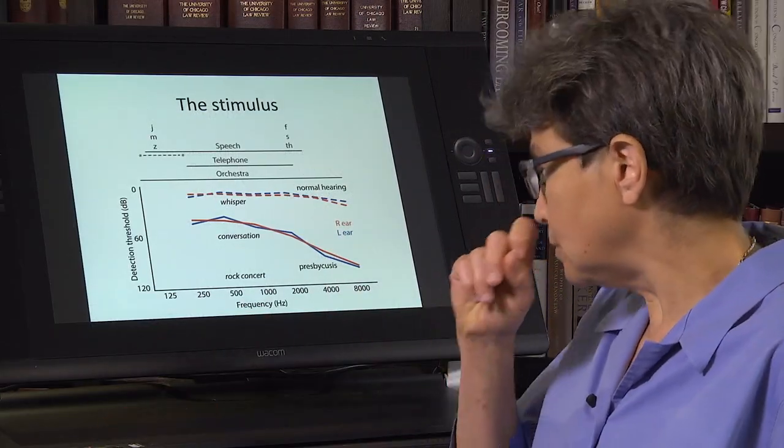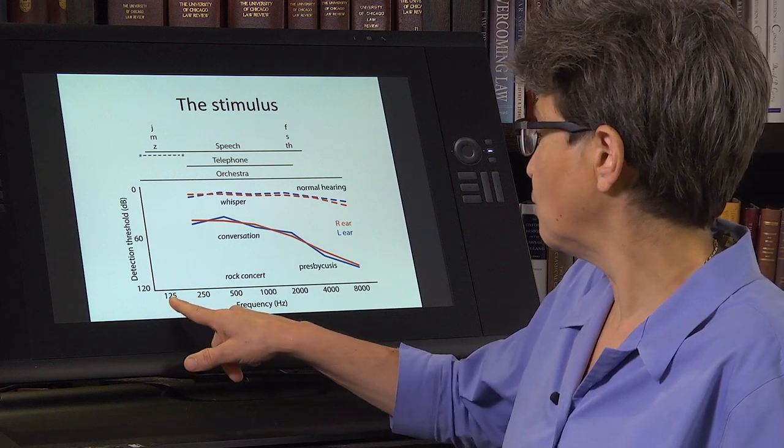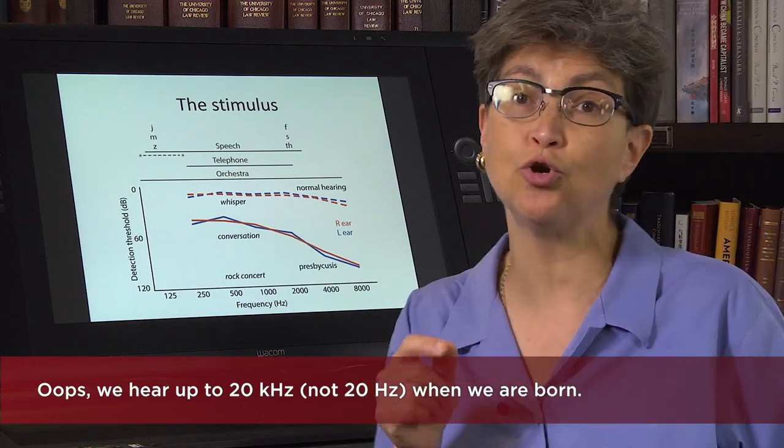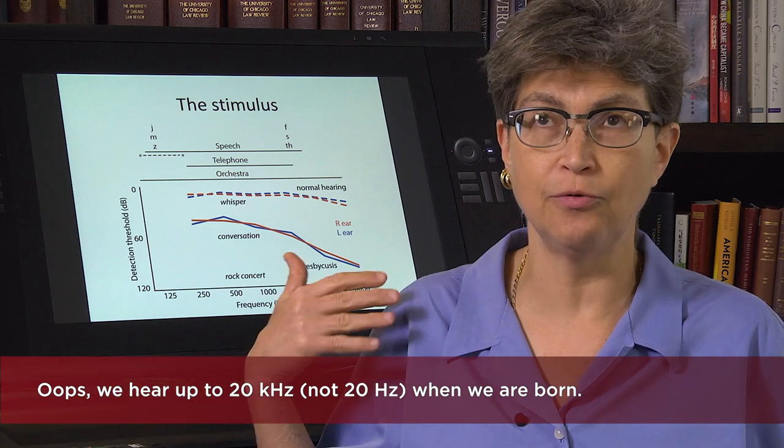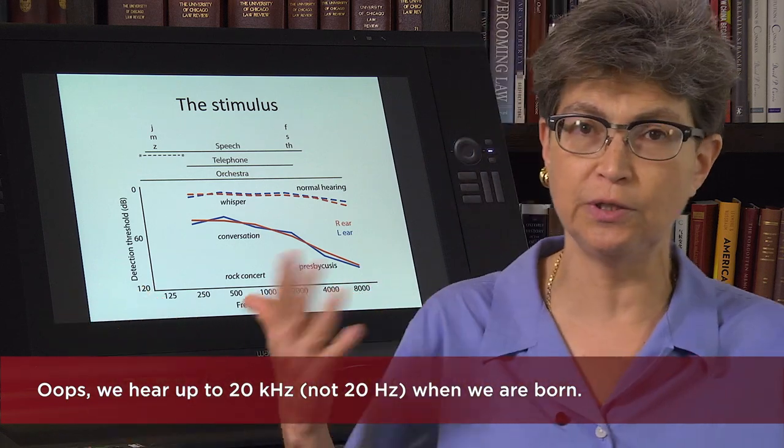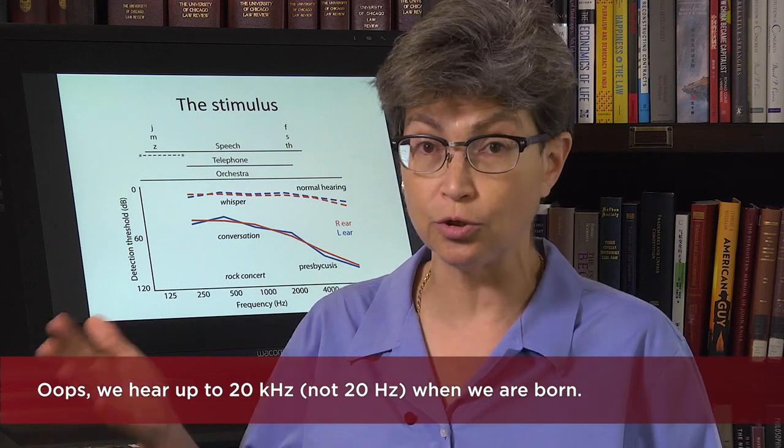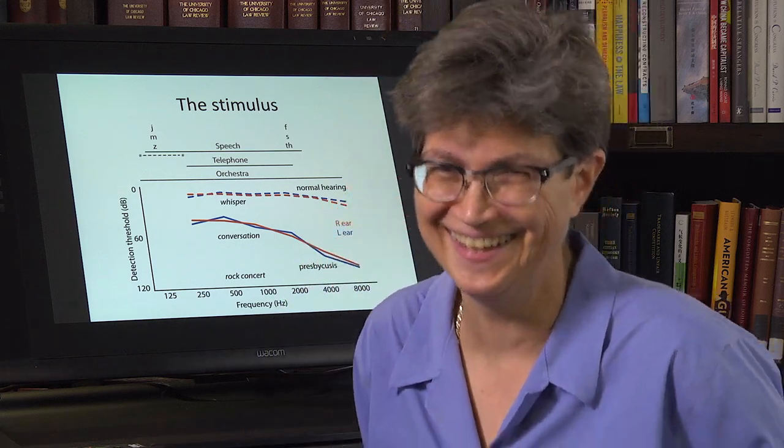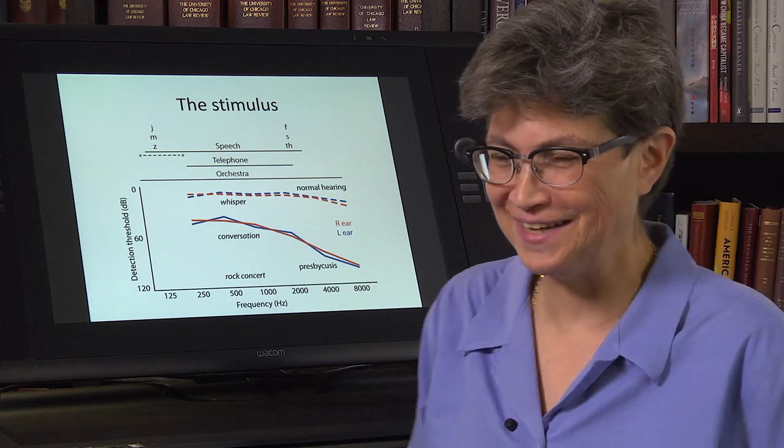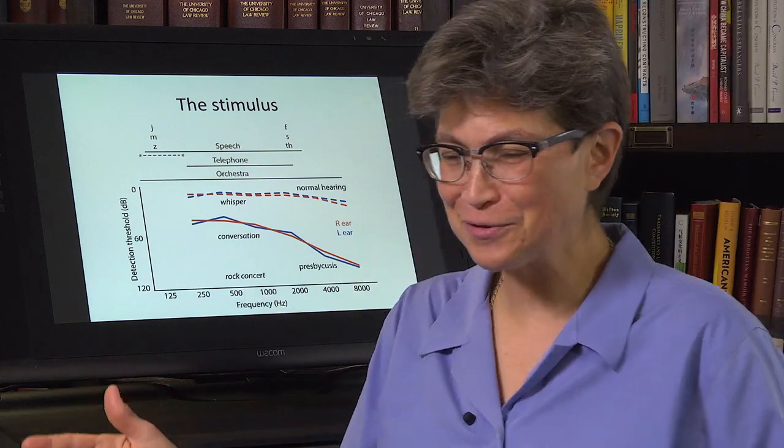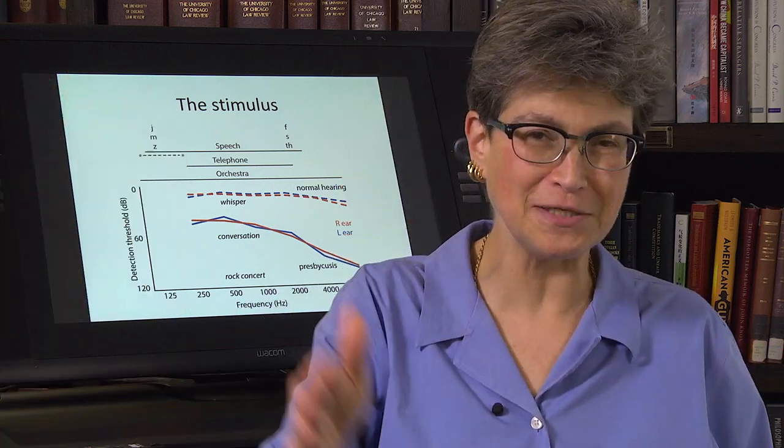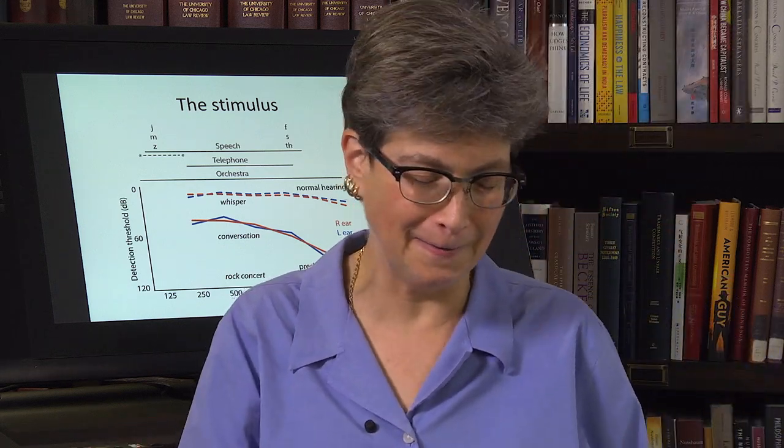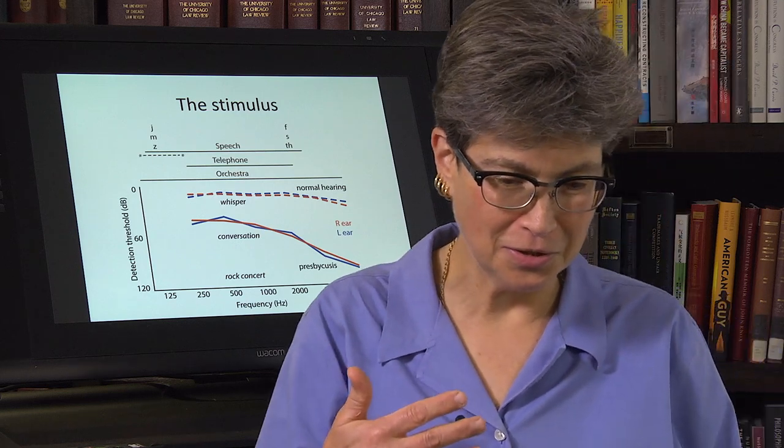Now, what about the frequencies that we hear? The frequencies that we hear range from under 100 hertz to about 20 kilohertz when we're born. Right now, I probably hear up to 11 or 12 kilohertz. So we were born with 20 kilohertz, hearing up to 20 kilohertz. You progressively lose that as you age.